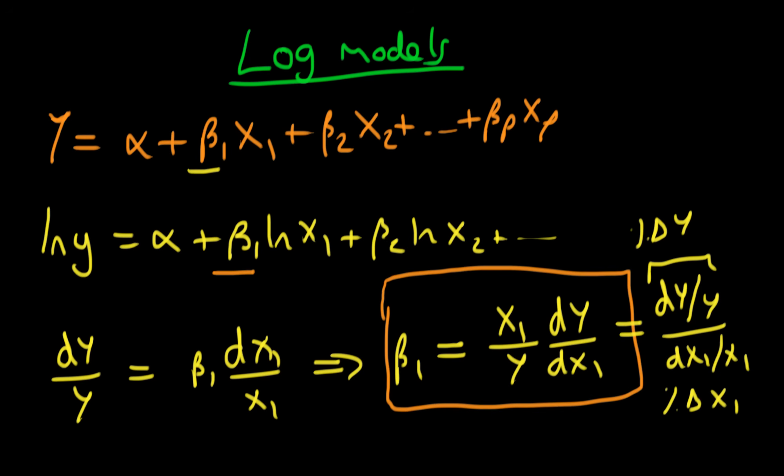So actually what beta 1 represents in this log model is it represents elasticities. In particular, it shows the partial elasticity of my dependent variable with respect to that particular independent variable. So assuming that all the other variables are constant, what would be the percentage increase in my dependent variable from a 1% increase in that variable in question?